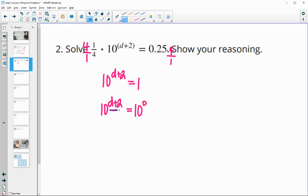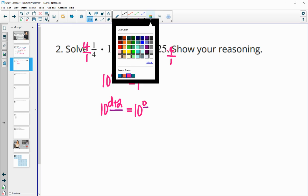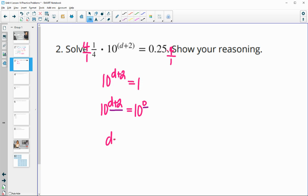And so then that would mean these exponents would need to match since they both have base 10. So d plus 2 would have to equal 0. Then we subtract 2 from both sides and we get d equals negative 2.